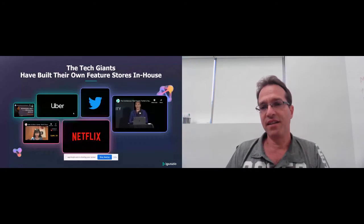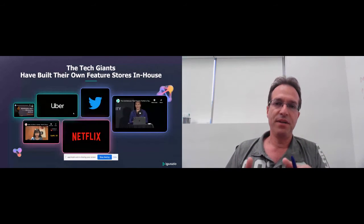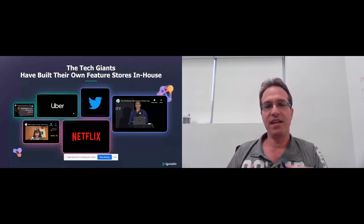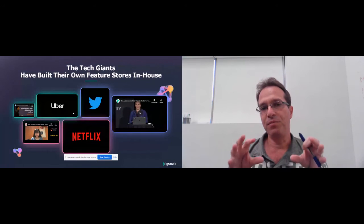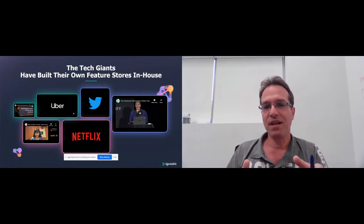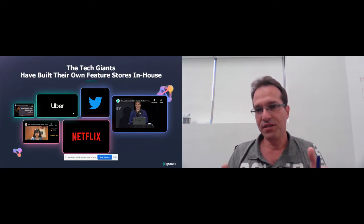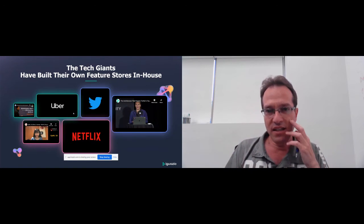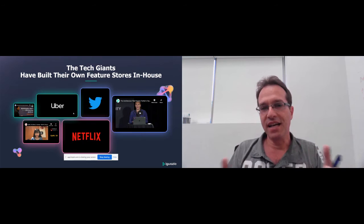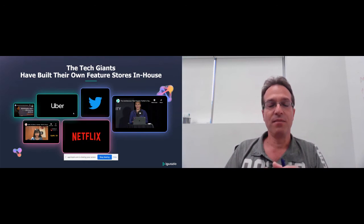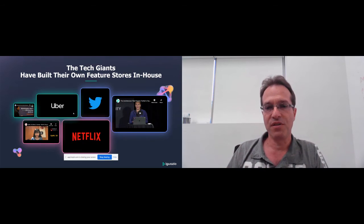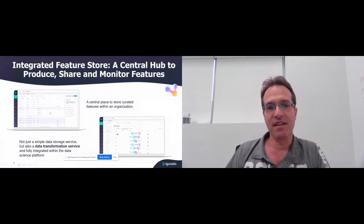If you look at the tech giants, they already figured this out. They created their own machine learning platforms with a feature store, because they have the resources and manpower. Uber came up with the Michelangelo platform, Netflix has their own solution, Twitter has their own solution, and so on. At Iguazio we believe these types of solutions should be available across any enterprise — not just for tech giants — so any enterprise can benefit from having a feature store.